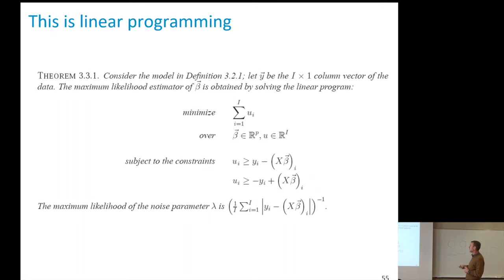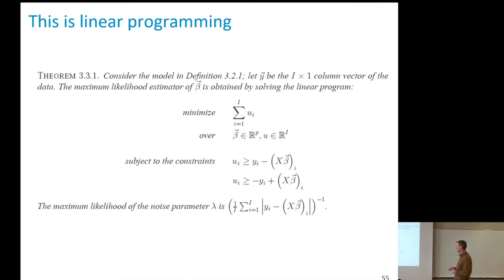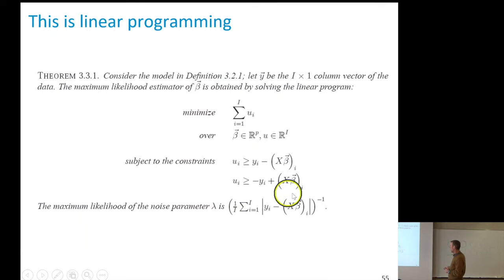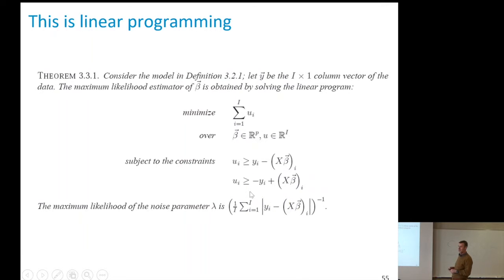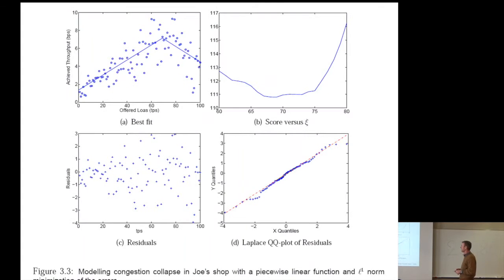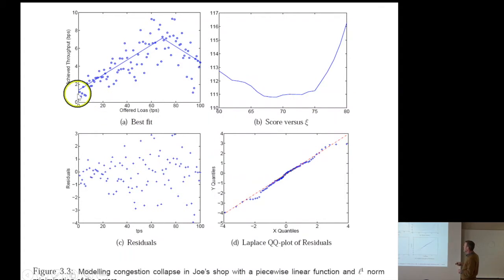It's less known because it's more complicated to solve a linear program than to apply a matrix computation — although if you have MATLAB, it's hardly different. We also know the maximum likelihood estimation of the noise parameter is one over the average value of the noise. This is what was done for Joe's shop when doing L1 instead of L2.